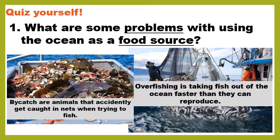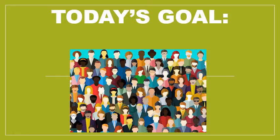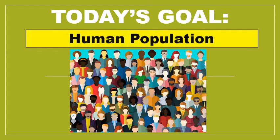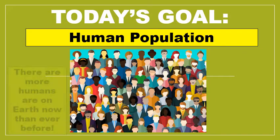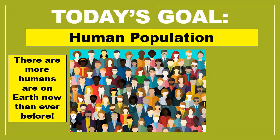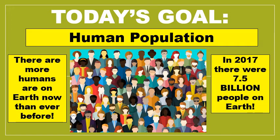We're not going to talk about fishing or overfishing today. We're going to talk about the human population, because we started a new topic. Some interesting facts: there are more humans on earth than ever before in human history. In 2017, about three years ago, there were 7.5 billion people on earth.